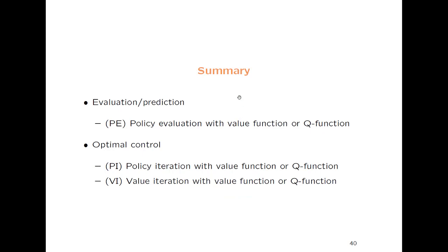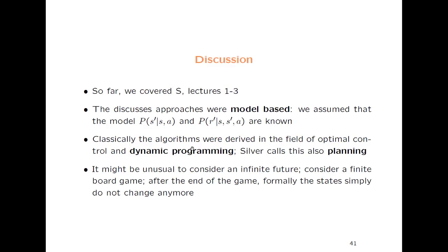As a summary, we have two problems. One is the evaluation — Silver sometimes calls it prediction — which is the evaluation of a given policy. You can use the value function or the Q function for that. To optimize the policy, you can use policy iteration, which means an evaluation step and then an optimization step. In value iteration, you do both concurrently — optimizing and estimating — and value iteration is typically faster than policy iteration. So far, we've covered Silver lectures 1 through 3. The discussed approaches are called model-based because we assume the model is known: P(s' | s, a) and the probability of reward given s, s', a.